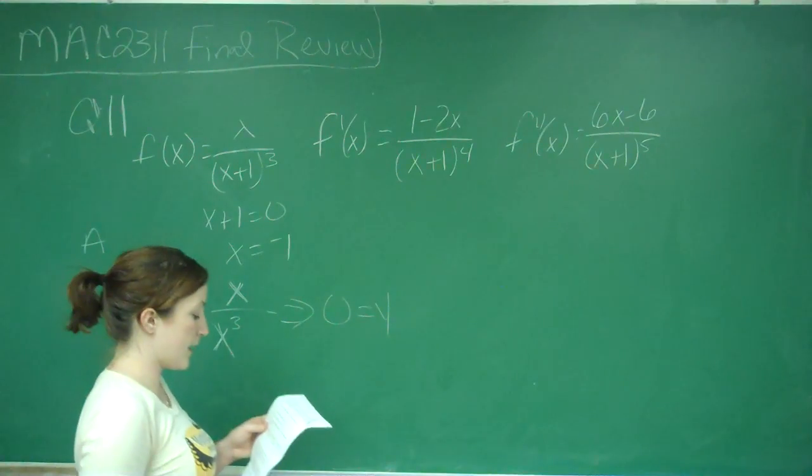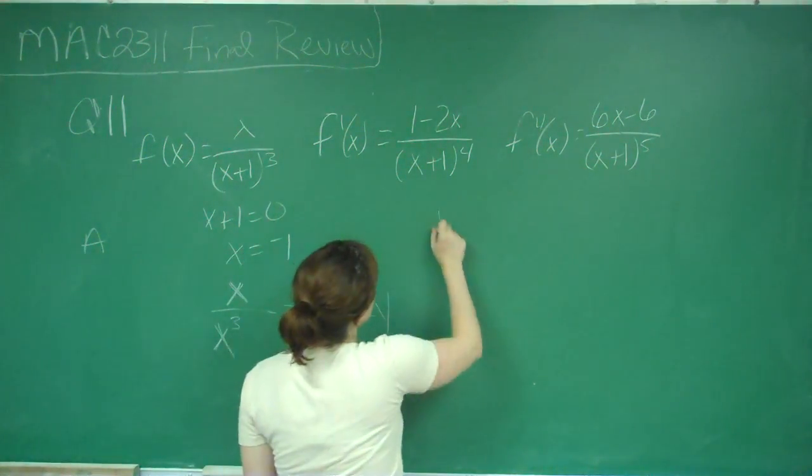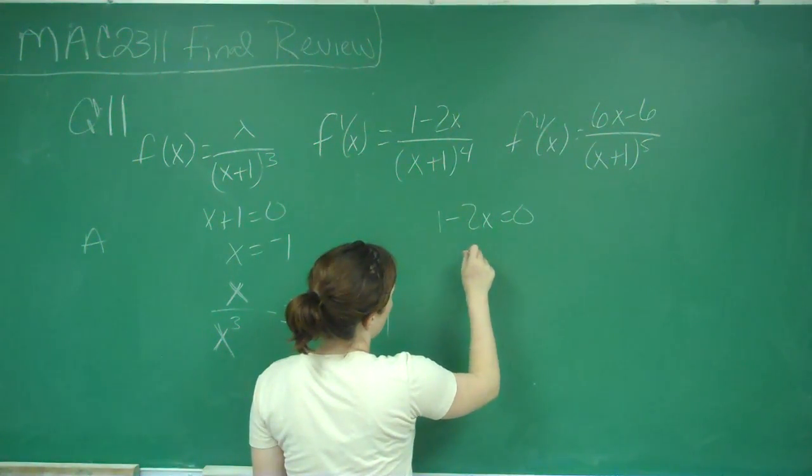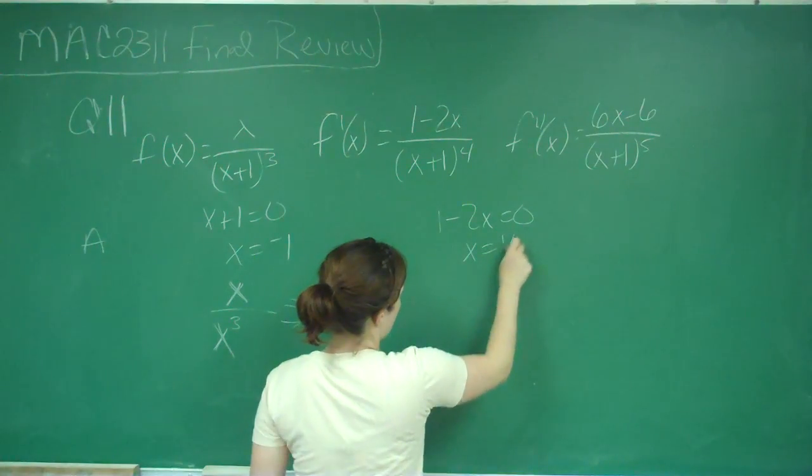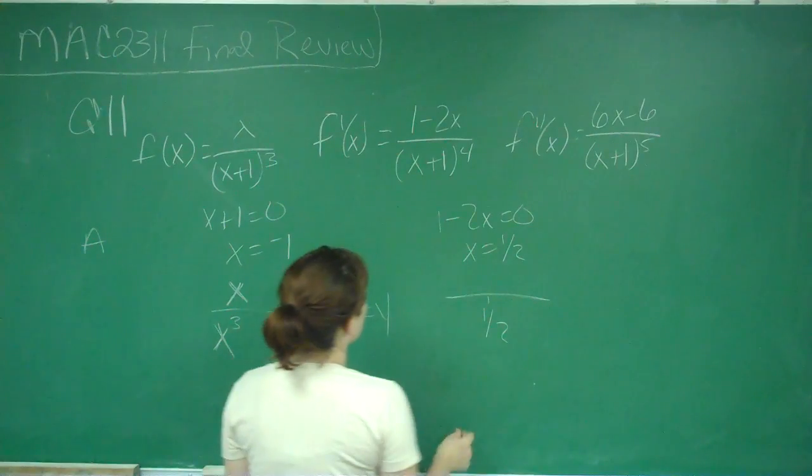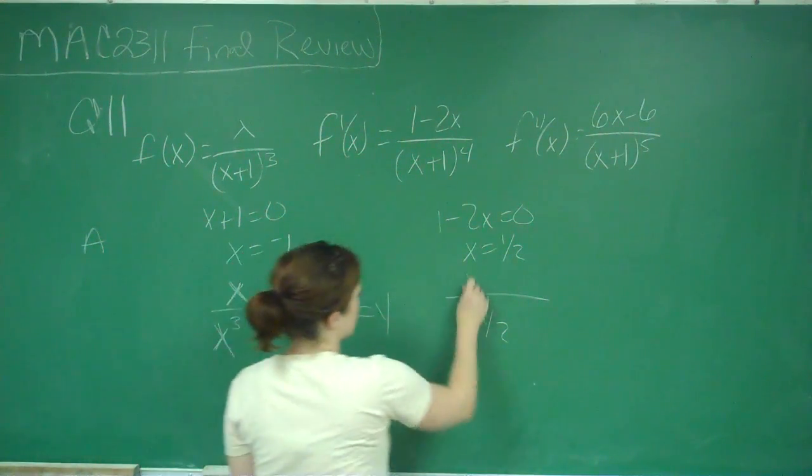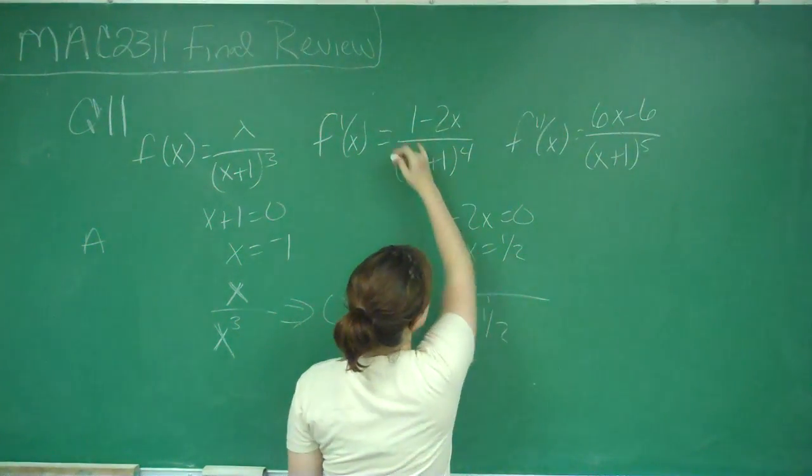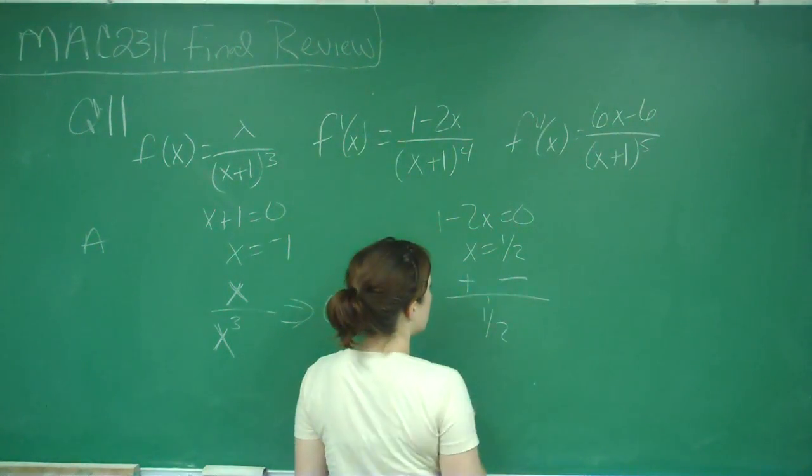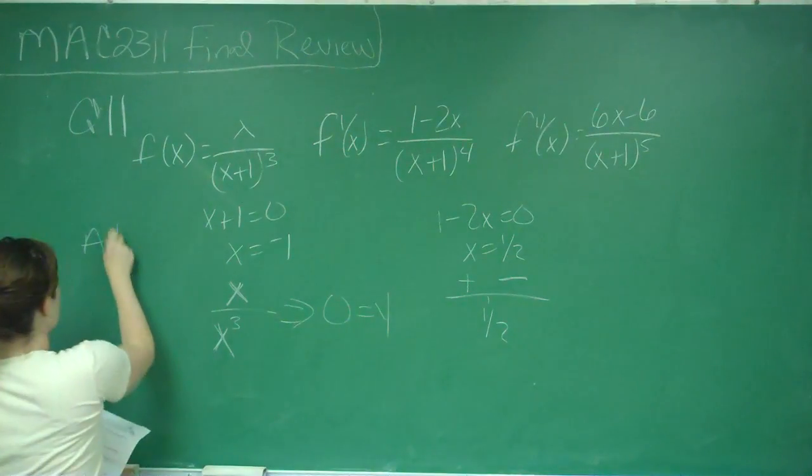B says, f of x has a relative maximum at x equals 1 half. So if we look here, you can set our top equal to 0 and solve, and we do get x equal to 1 half. So what we need to do is test points on either side. So if I plugged in a 0, I would get 1 over 1 to the 4th, so this is positive. And then I know that since this has a multiplicity that's odd, it's going to switch over my value. So it is a relative max. So B is also true.